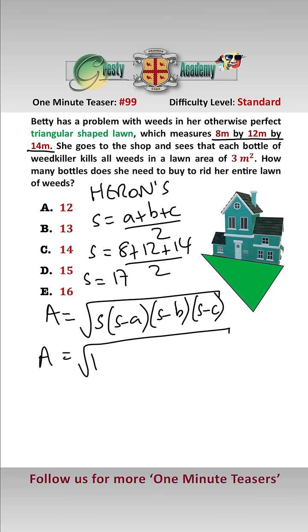And then all we've got to do is plug in our values here, which is the square root of 17 times 17 minus 8, which is 9, times 17 minus 12, which is 5, times 17 minus 14, which is 3, and that gives us square root 2295.